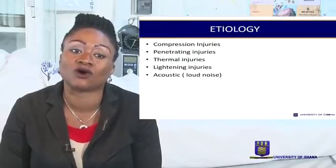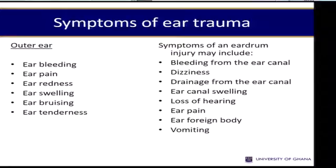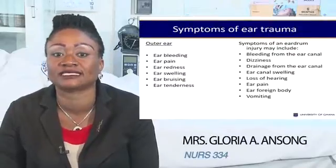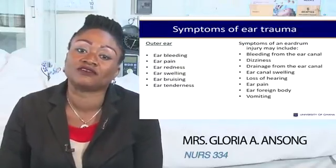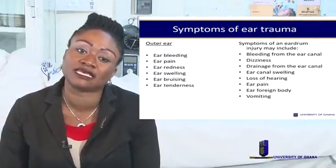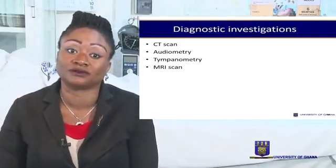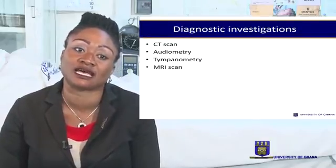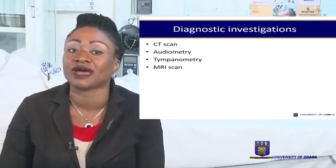The etiology includes compression injuries, penetrating injuries, thermal injuries, lightning injuries, and acoustic or loud noise. Symptoms of ear trauma include ear bleeding, pain, redness of the ear, swelling, ear bruising, stuffiness, bleeding from the ear canal, dizziness, drainage from the ear canal, ear canal swelling, hearing loss, and vomiting. Diagnostic investigations include CT scan, audiometry, tympanometry, and MRI scans.